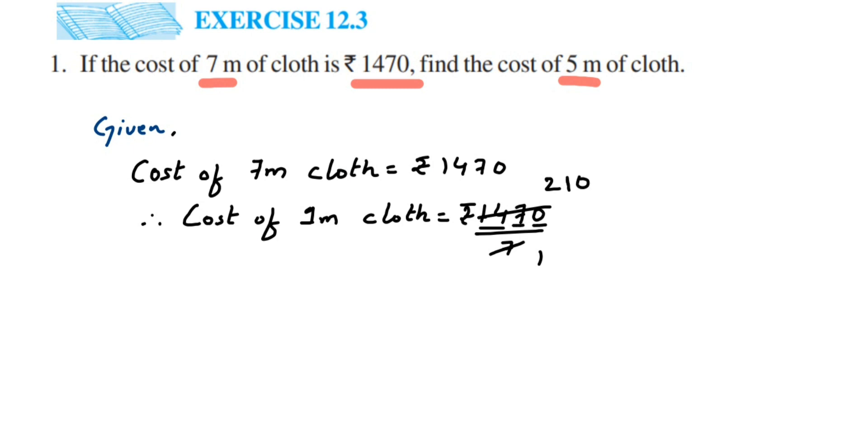This is the cancellation. If you don't know how to cancel, you can divide the number - 1470 by 7. Whatever answer you get will be the same. We get 210. So the cost of 1 meter cloth is rupees 210.